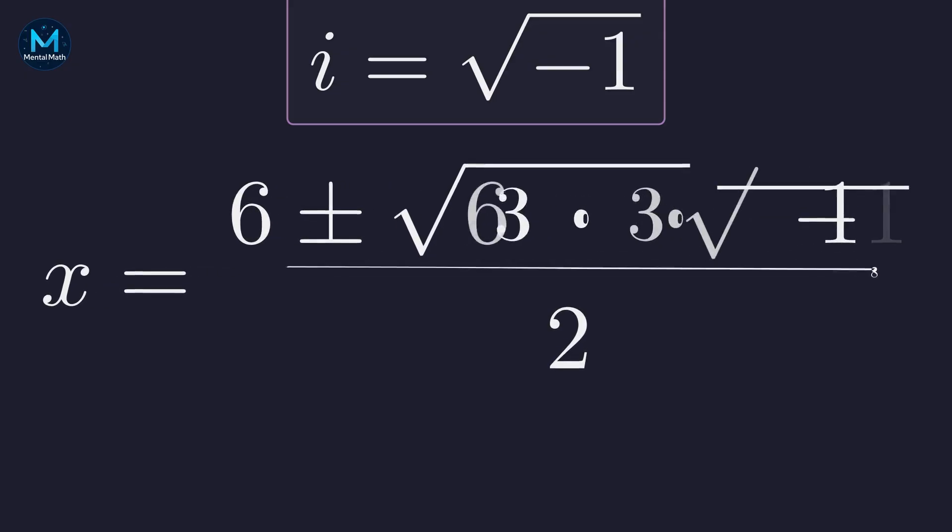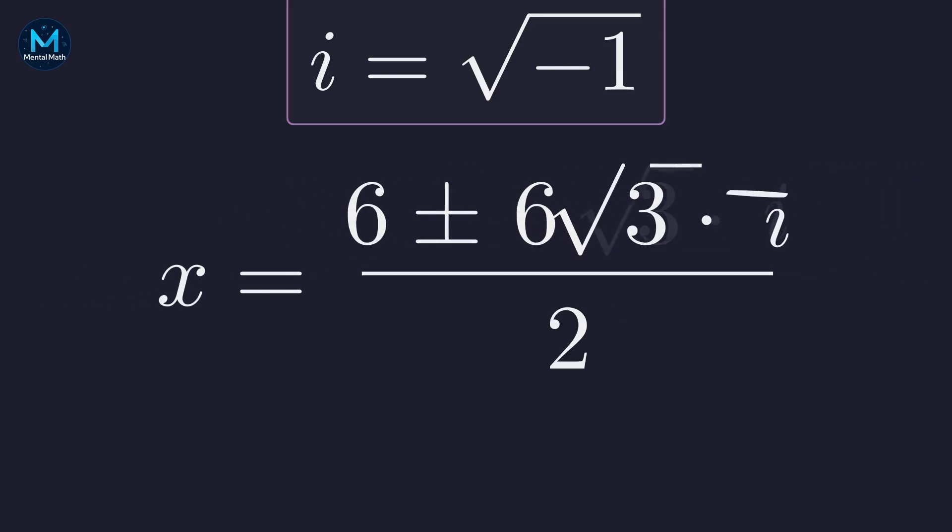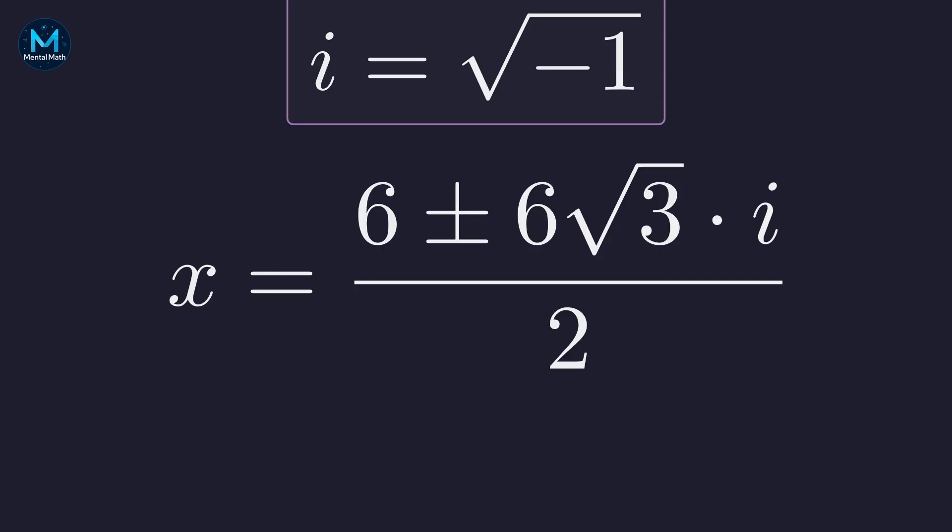Writing 108 as 36 times 3, we can pull out the square root of 36 and write the square root of negative 1 as i. The square root of 36 is 6. So we have 6 times the square root of 3 times i.